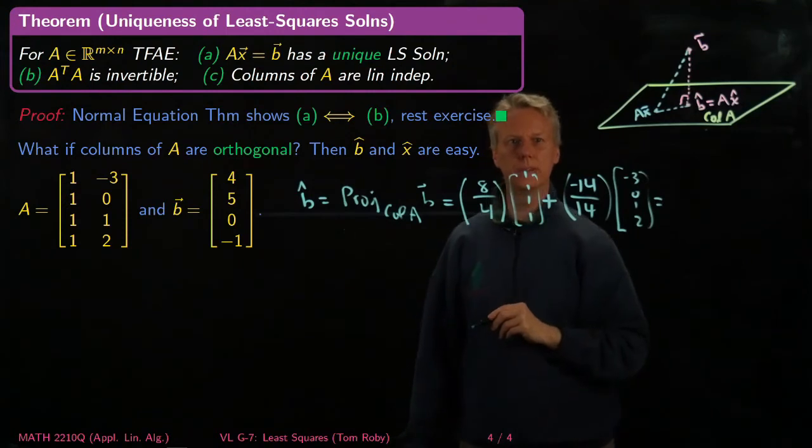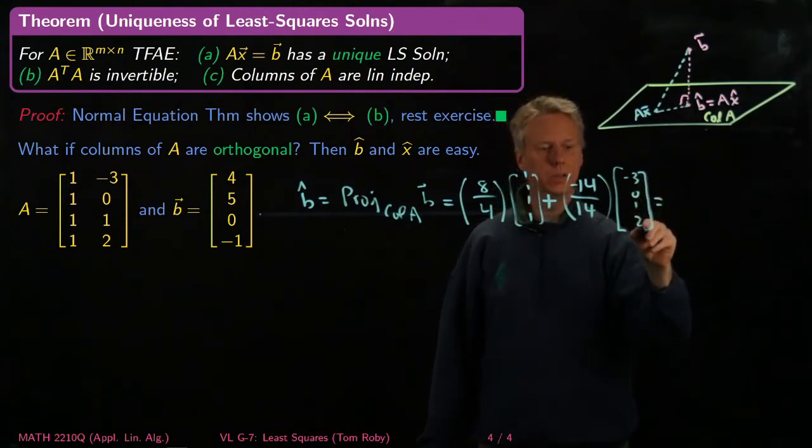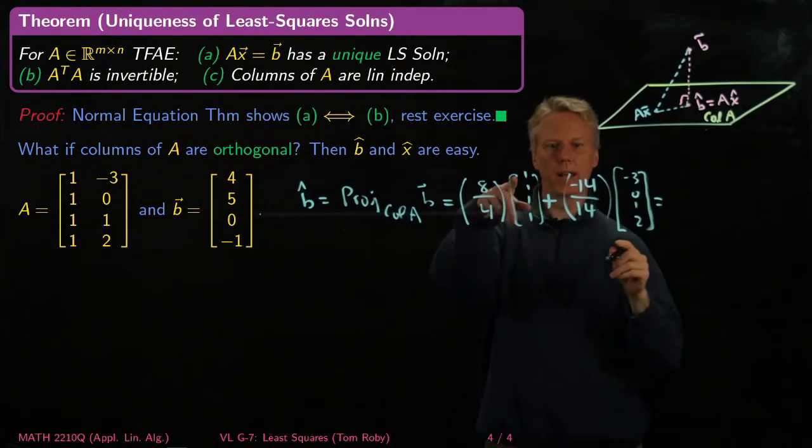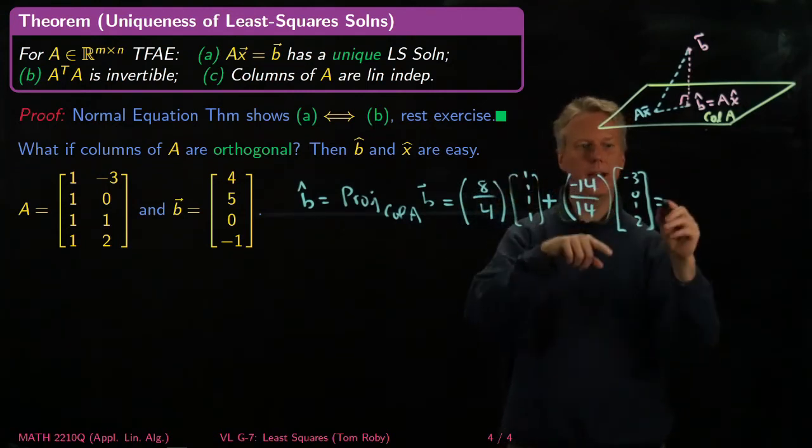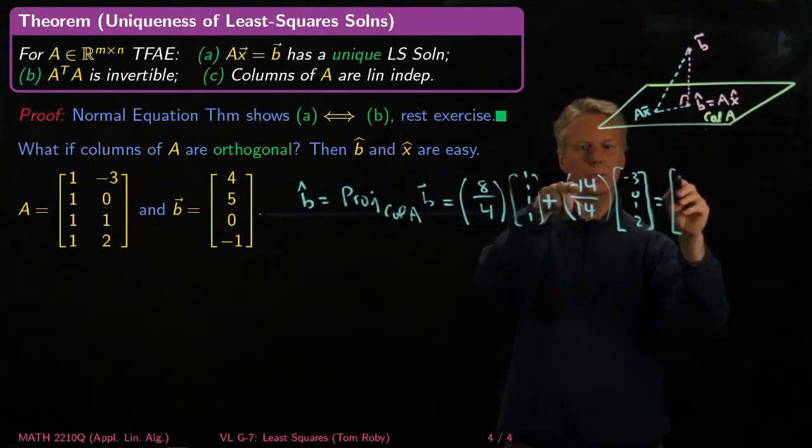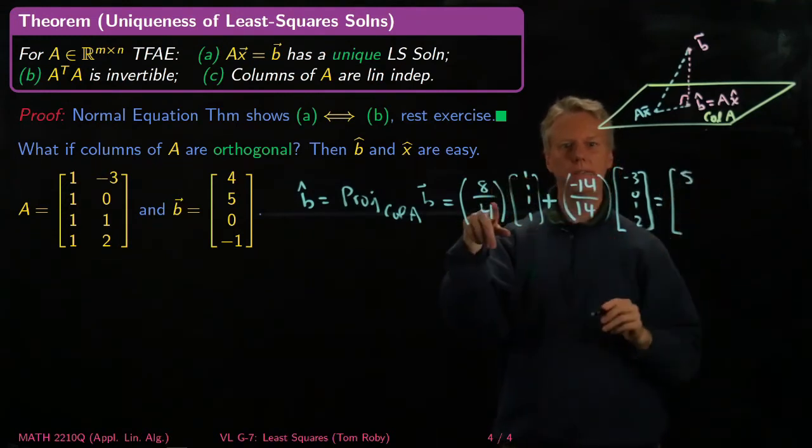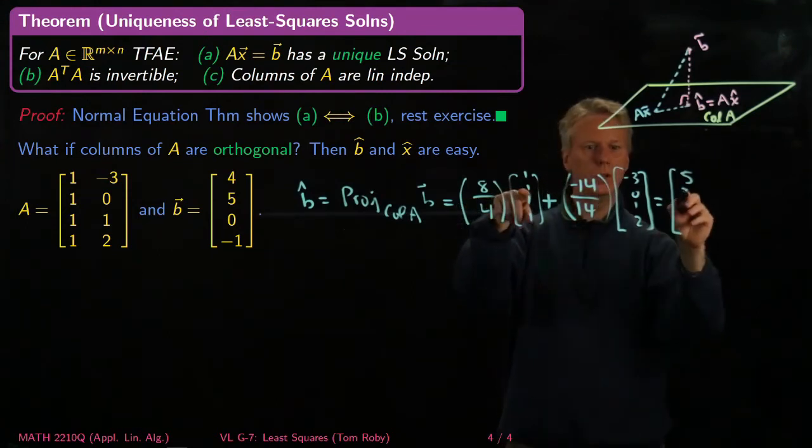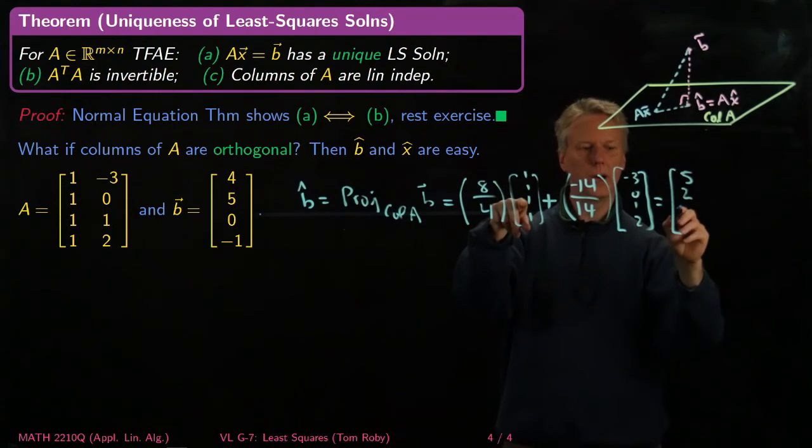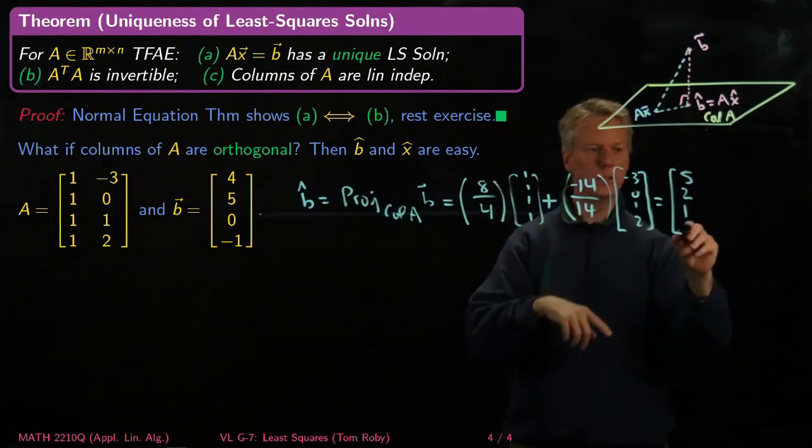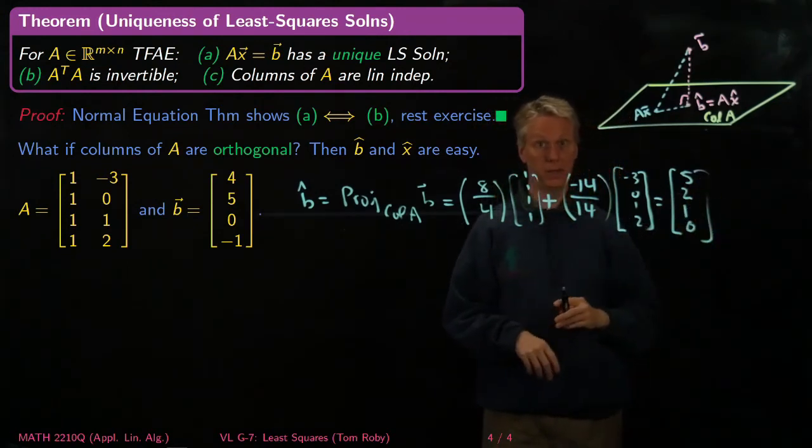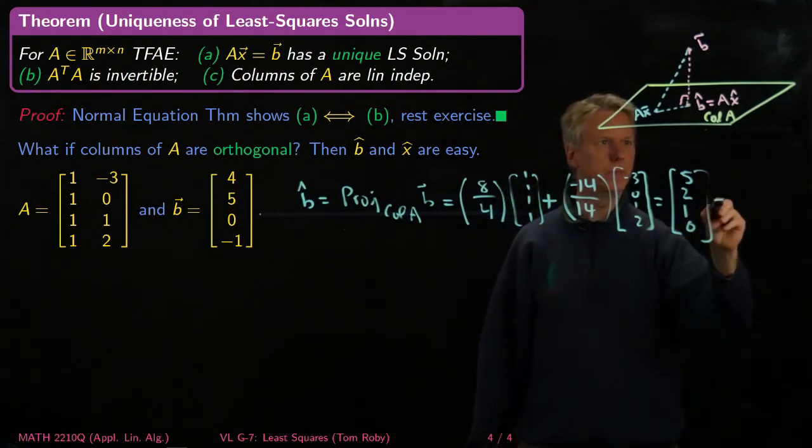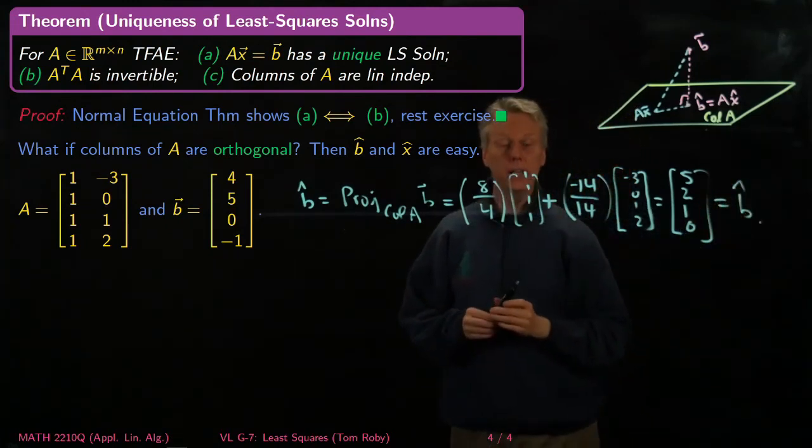And so then what happens? I just compute this and I end up with 2 times this minus 1 times that. So 2 - (-3) is 5, 2 + 0 is 2, 2 - 1 is 1, and 2 - 2 is 0. So [5, 2, 1, 0] is the, so this is equal to B hat.